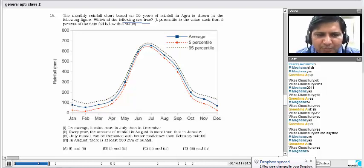On an average, it rains more in July than in December. So on an average, it rains more in July is correct. Every year, it rains more in July is not correct. So the first statement, on an average, it rains more in July than in December. The first statement is true.